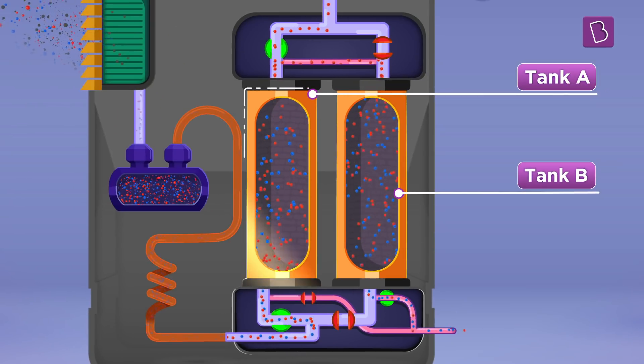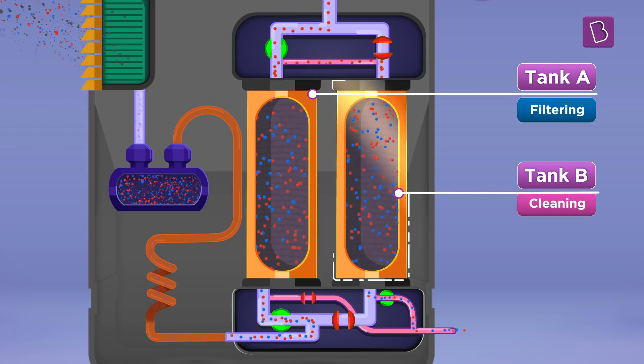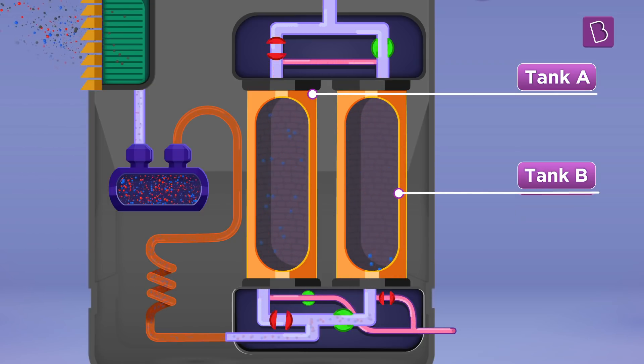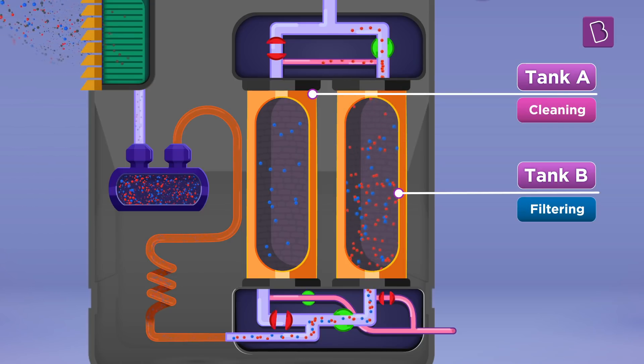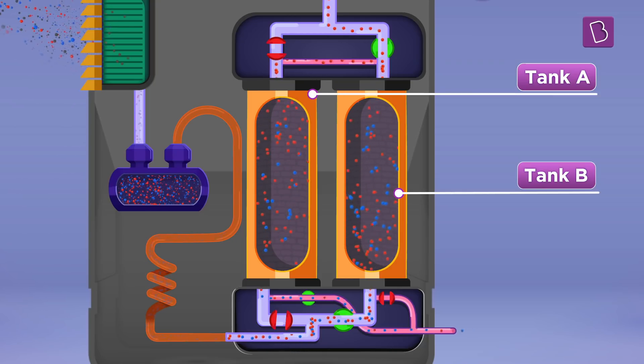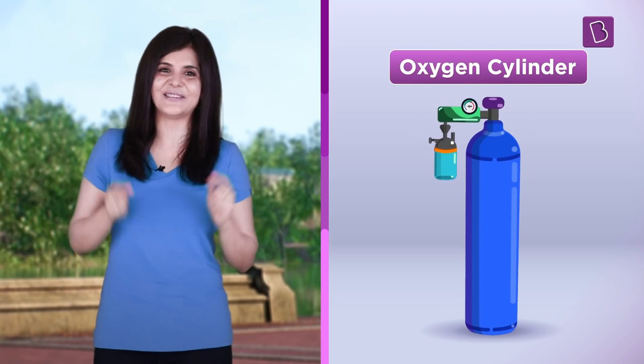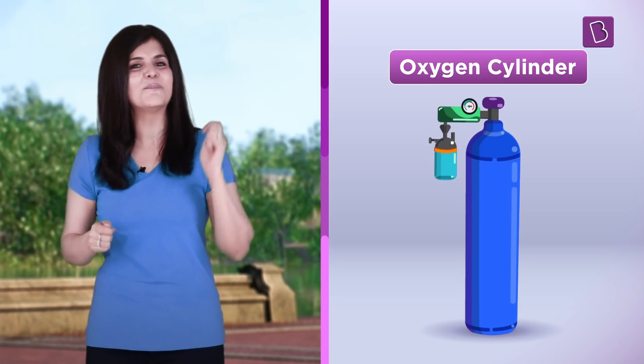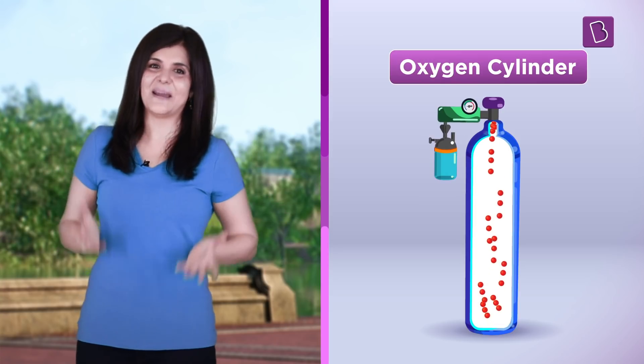This way, while one tank is supplying pure oxygen, the second tank is getting clean. This cycle swings from tank A to tank B in a manner that as long as the device is plugged in, there is no pause in the supply of oxygen. And hey, what's this? This is an oxygen cylinder, which is just like your water bottle that you carry to school. Your own portable cylinder of oxygen, which gets refilled, but it also gets empty.